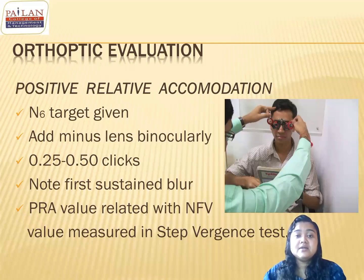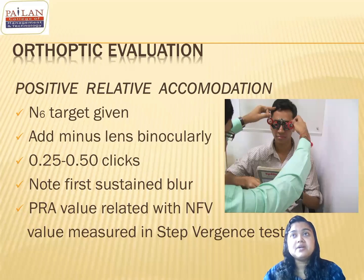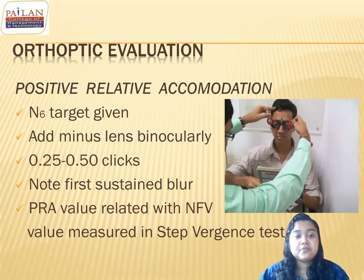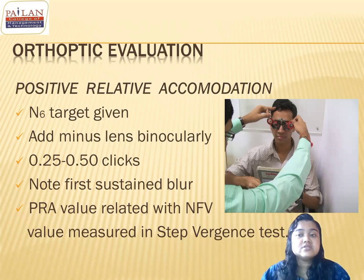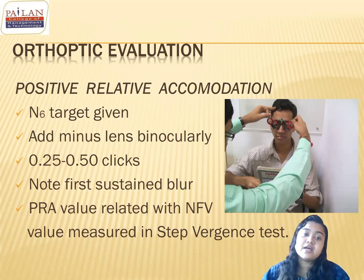If the PRA value is less — lesser than minus 2.5 diopters — then what is the problem? If the PRA value is lesser, that means the patient cannot stimulate the accommodation properly. So if you get a lesser amount of PRA value, along with that if your amplitude of accommodation is also less, that means the patient might have an accommodative insufficiency.